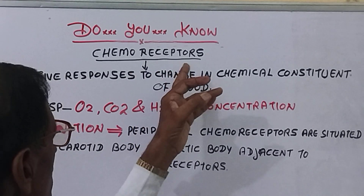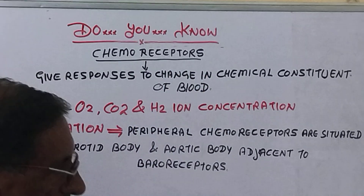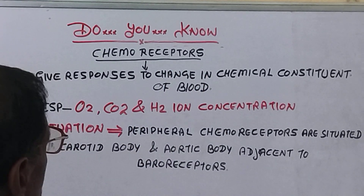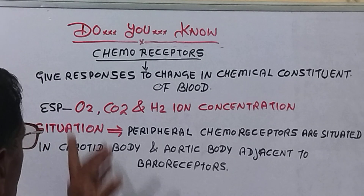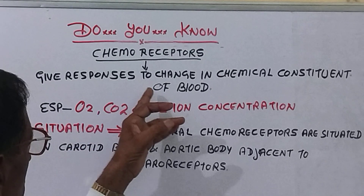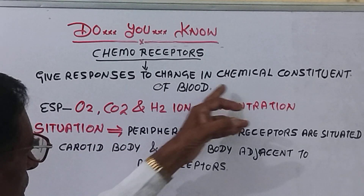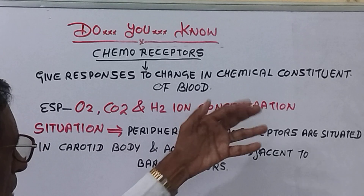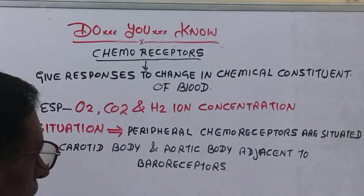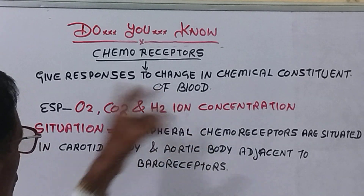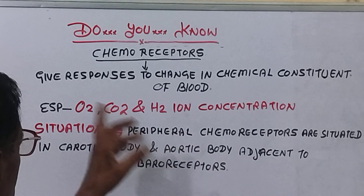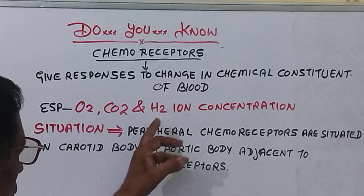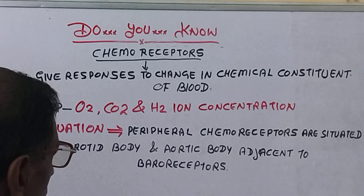I would like to tell you about chemo-receptors. First, I have told you about vital receptors, which give responses to changes in the chemical constituents of the blood. Chemo-receptors respond to chemical constituents — specifically O2, CO2, and ion concentration.